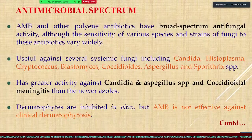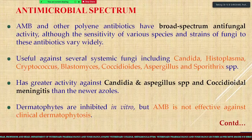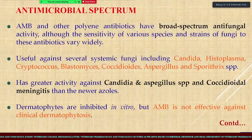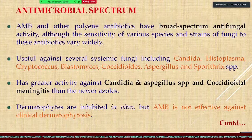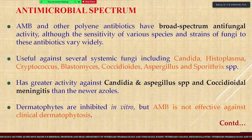Coming to the antifungal spectrum, Amphotericin B is a polyene antibiotic with a broad spectrum of antifungal activity. The sensitivity of various species and strains of fungi to this antibiotic varies widely from agent to agent. It is useful against several systemic fungi including Candida, Histoplasma, Cryptococcus, Blastomyces, Coccidioides, Aspergillus, and Sporothrix. There is a big range of fungal species which are susceptible to it.